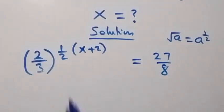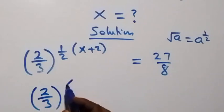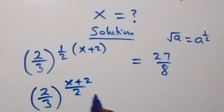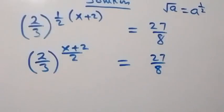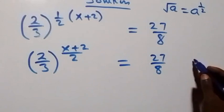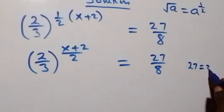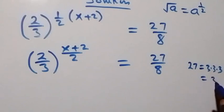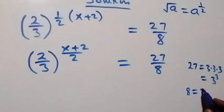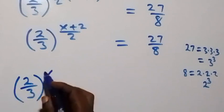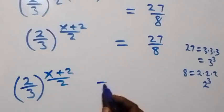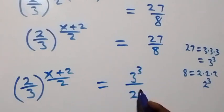Since this power multiplied, we can write this again as 2 over 3 raised to power (x plus 2) over 2, equals to 27 over 8. Now 27 can be written as 3 times 3 times 3, which is 3 raised to power 3, and 8 can be written as 2 times 2 times 2, which is 2 raised to power 3. So we have 2 over 3 raised to power (x plus 2) over 2, equals to 3 raised to power 3 over 2 raised to power 3.